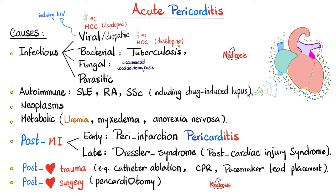Trypanosoma cruzi — Chagas disease — affects the heart. And do not underestimate Lyme disease, a spirochetal infection. Autoimmune diseases such as lupus, rheumatoid arthritis, systemic sclerosis, and even drug-induced lupus can lead to acute pericarditis. Neoplasms can also cause it. Metabolic diseases such as uremia — kidney failure — and myxedema, i.e., hypothyroidism, can ruin the heart. Anorexia nervosa can also trigger pericarditis, probably due to electrolyte abnormalities. And then post-myocardial infarction, post-cardiac trauma, and post-cardiac surgery.